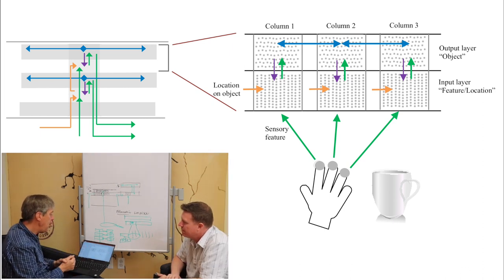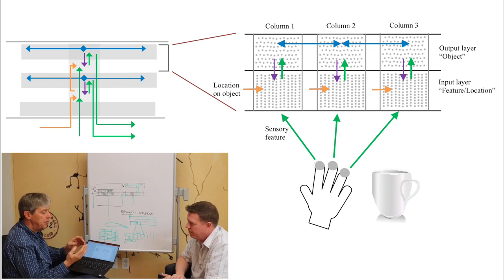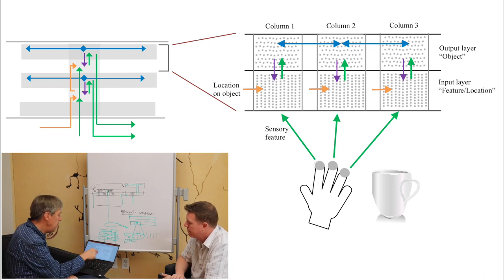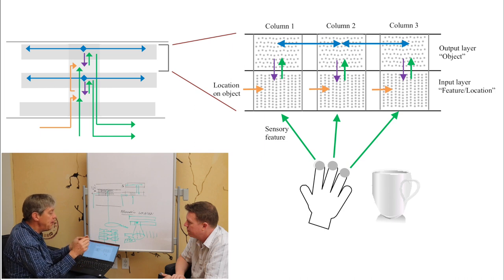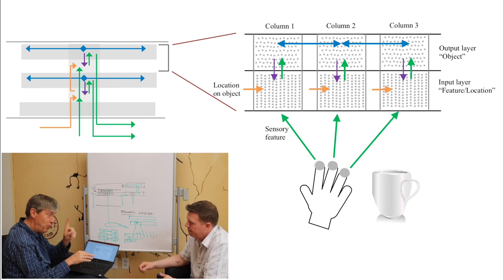So we have these three columns, and you can think of them like the tips of your three fingers. There's a column representing these three fingers. And each finger touches something, and each finger gets some input. Now, it's really good to think about in terms of touch, because you can understand that the three fingers move somewhat independently. They're not touching the same part of object. They have different movements. This is important.